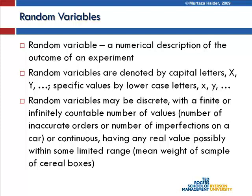Random variables can also be continuous, having any real value within some range. For example, the mean weight of a sample of cereal boxes — if you weigh 50 samples, you get 50 averages, and those are continuous. Whereas if you count the number of imperfections in 50 brand new cars, those counts are discrete random numbers.